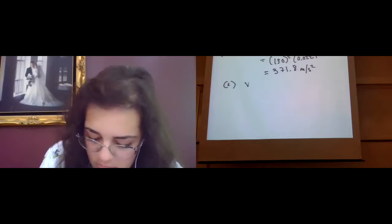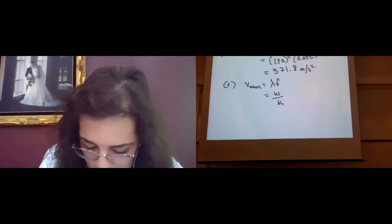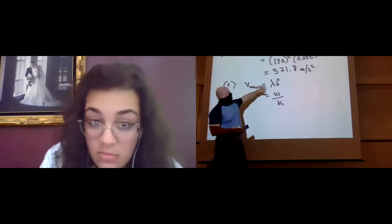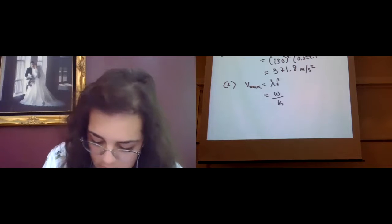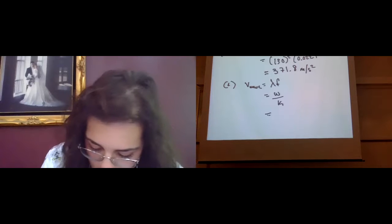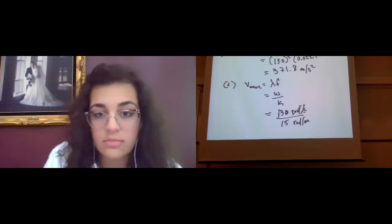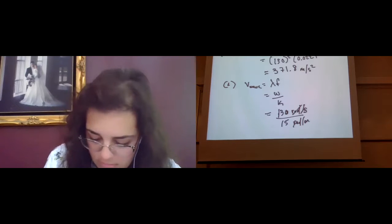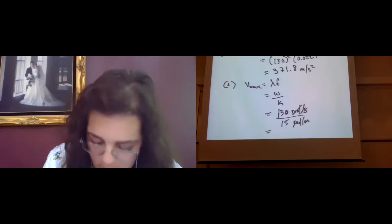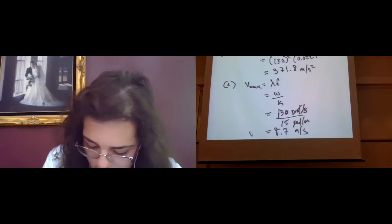Part C wants to know the speed of the wave. We know that the speed of the wave is equal to the wavelength times the frequency, or the angular frequency divided by the wave number. Since we were told directly what omega is and what k is, it's easier to use that definition. This is 130 radians per second divided by 15 radians per meter — radians cancel, giving meters per second — which works out to be 8.7 meters per second. This is the velocity of the wave.